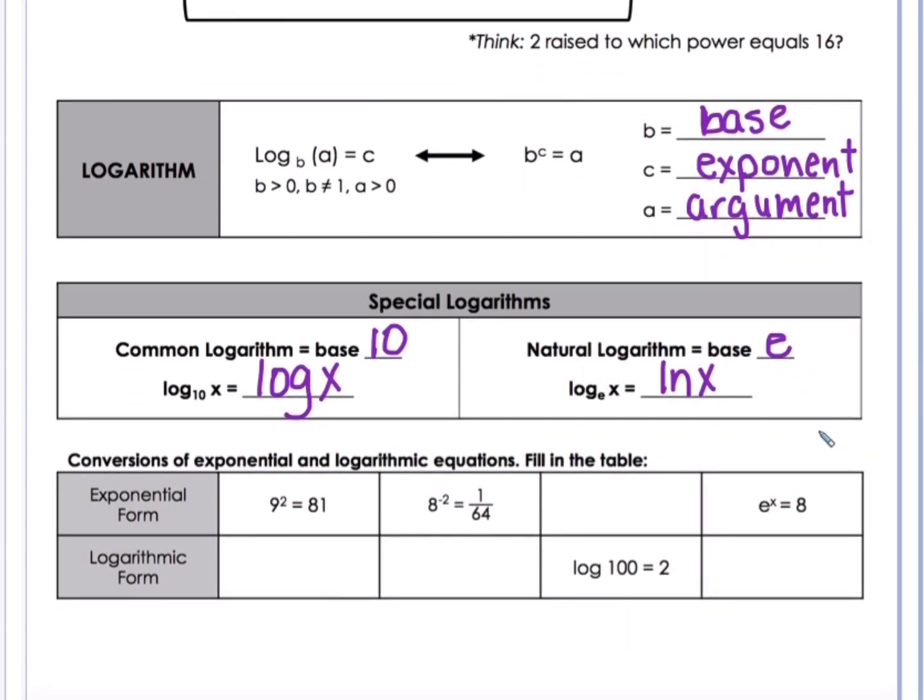Converting exponential and logarithmic equations, we're going to fill in this table. If I have this in exponential form, I want to rewrite it in logarithmic form. So I'm going to say log base 9 of 81 will give me 2. So 9 to the squared does give me 81. That's the relationship there. If I've given this one in exponential form, I'm going to write it in log form. Log base 8 of 1 over 64 equals negative 2. So 8 to the negative 2 power does equal 1 over 64.